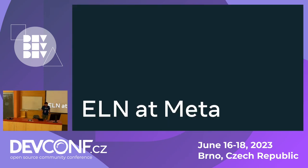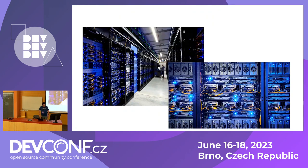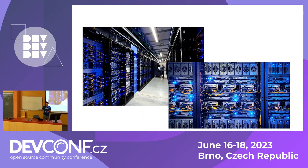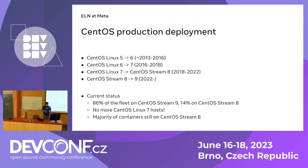So much for the intro — let's talk about what we're doing with this at Meta. A quick primer on the infrastructure at Meta: as you might have heard, Meta has a lot of machines. We have millions of servers — all physical machines running in data centers across the world. They all run CentOS Stream right now.